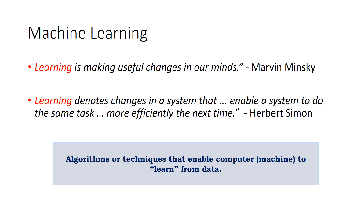So what are algorithms? Algorithms or techniques enable a computer — a machine — to learn from data. Machine learning is nothing but an algorithm or technique that enables a machine to learn from data. Data is anything you collect — whatever you are gathering is data.